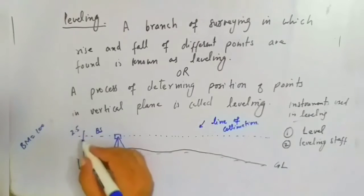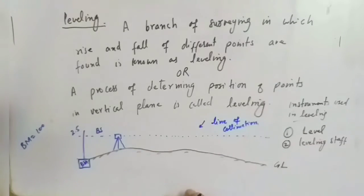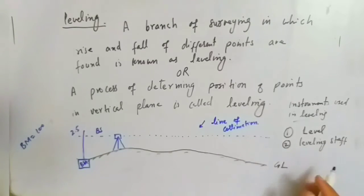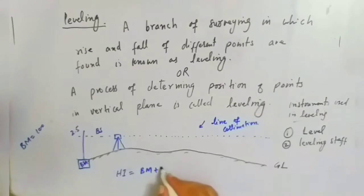If you want to determine the height of instrument, height of instrument will be equal to benchmark plus backsight: 100 plus 2.5, that will be equal to 102.5 meters.